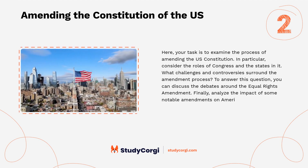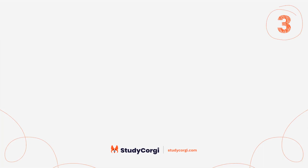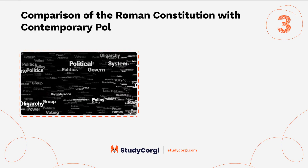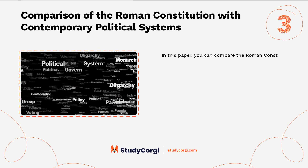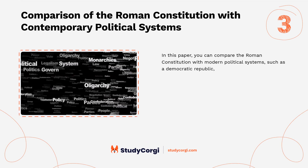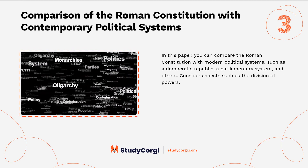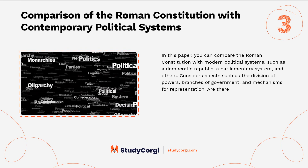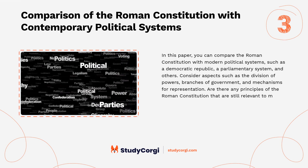Comparison of the Roman Constitution with contemporary political systems: compare the Roman Constitution with modern political systems such as a democratic republic, a parliamentary system, and others. Consider aspects such as the division of powers, branches of government, and mechanisms for representation. Are there any principles of the Roman Constitution that are still relevant to modern political systems?